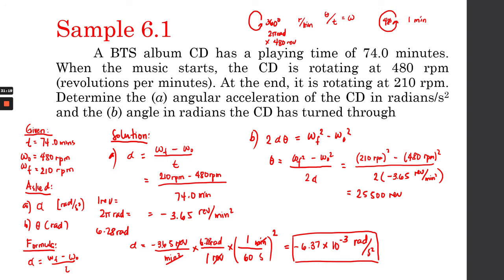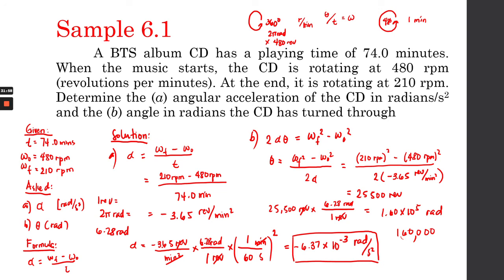Since the answer needs to be in radians, we convert: 25,500 revolutions multiplied by 6.28 radians per revolution, canceling revolutions, gives us 1.60 × 10⁵ radians, or 160,000 radians.